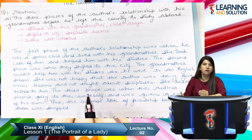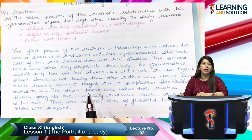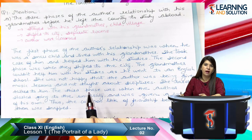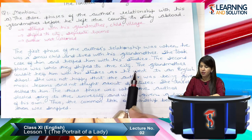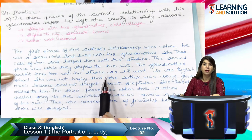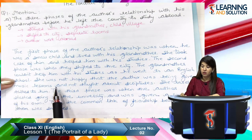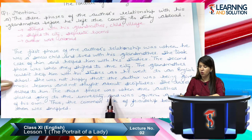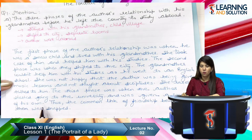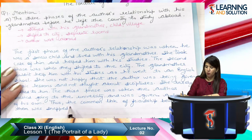When the grandson was living with the grandmother in the village as a child, she used to look after him and his studies. The second phase was when they shifted to the city — the grandmother couldn't help him with his studies anymore because he went to an English school. She was not happy that the author was being given music lessons and not taught about scriptures. She rarely talked to him. The third phase was when the author started going to university and was given a room of his own — this is when the common link of friendship between them was snapped, meaning broken.